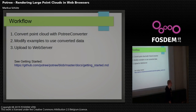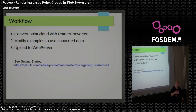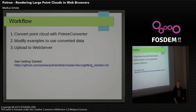The workflow of using Potree looks like this. First, you have to convert your point cloud with the Potree converter. The converter creates a multi-resolution hierarchy of the point cloud, which is needed to stream points efficiently. Then you just take one of the existing examples and modify the path to use your own point cloud data. The last step is to load everything on a web server, and that's it.